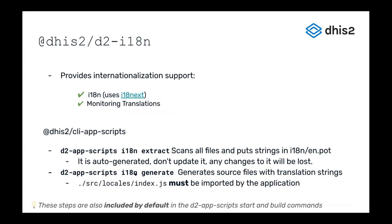That's what the extract step does — it puts all found strings into en.pot. Then the generate step takes that en.pot file and produces two or more files. One is a source/locales/index.js that must be imported by your application to initialize translations. It also generates JSON files within source/locales for the English strings, French strings, Swahili strings, and so on.